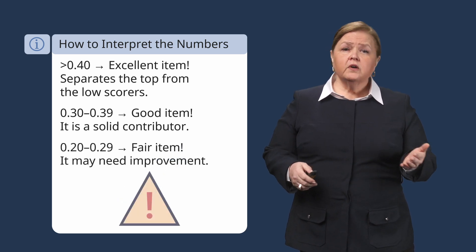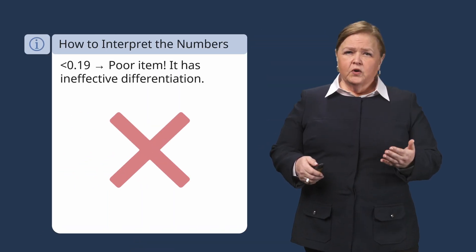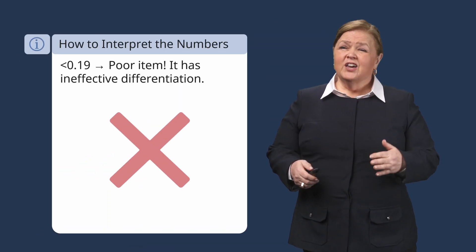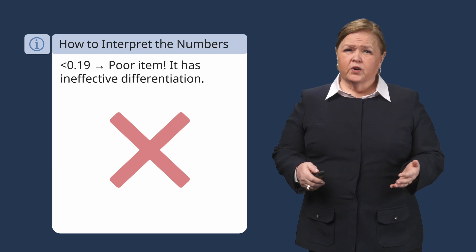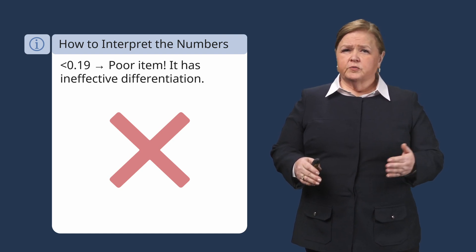Point two oh to point two nine — that's fair discrimination. These questions are working, but they likely need some fine tuning from you. If it's below point one nine, this is poor discrimination and you're going to have to do some work on these. These questions don't effectively distinguish between different knowledge levels; they might be too easy, too difficult, or the wording might be confusing.